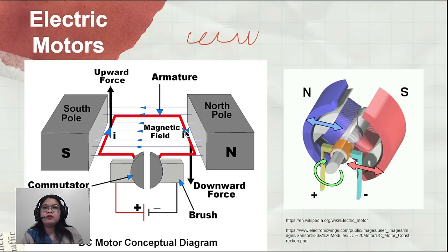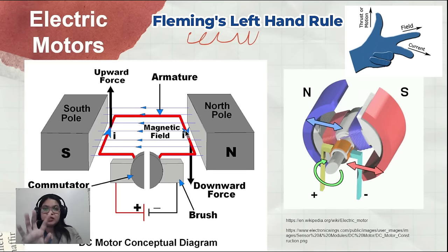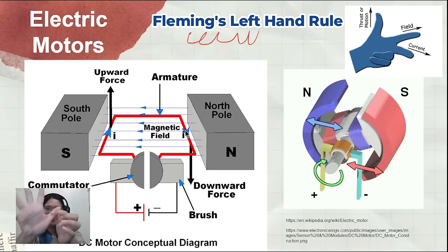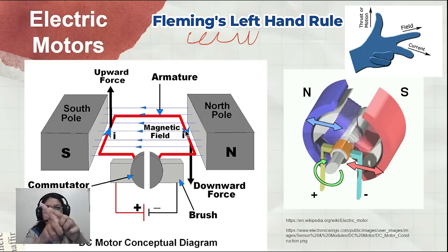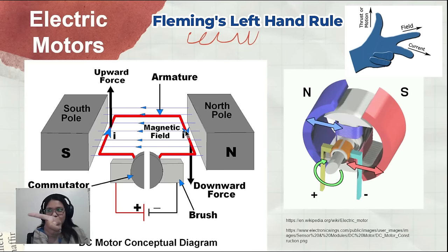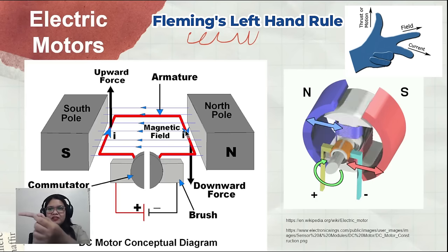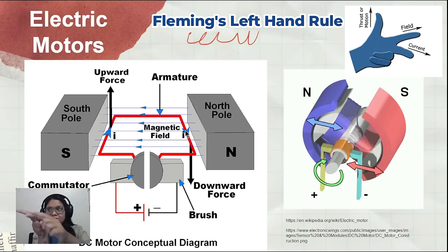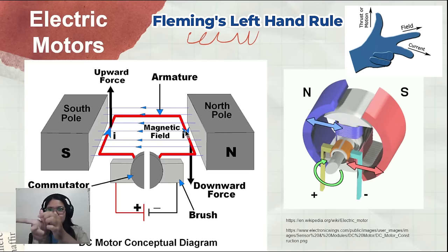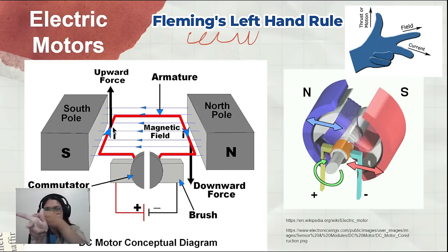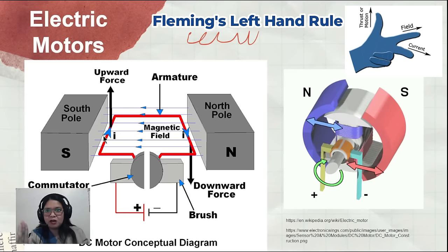For the case of motors, we use what we call Fleming's left-hand rule, using your left hand's index finger, middle finger, and thumb. Your index finger should point to the direction of the magnetic field — from north to south. Your middle finger should point to the direction of the current. And your thumb should point to the direction of the force. So at this part, the magnetic field goes that way, the current is going in, and therefore the force goes upward — meaning this part of the armature rotates clockwise.